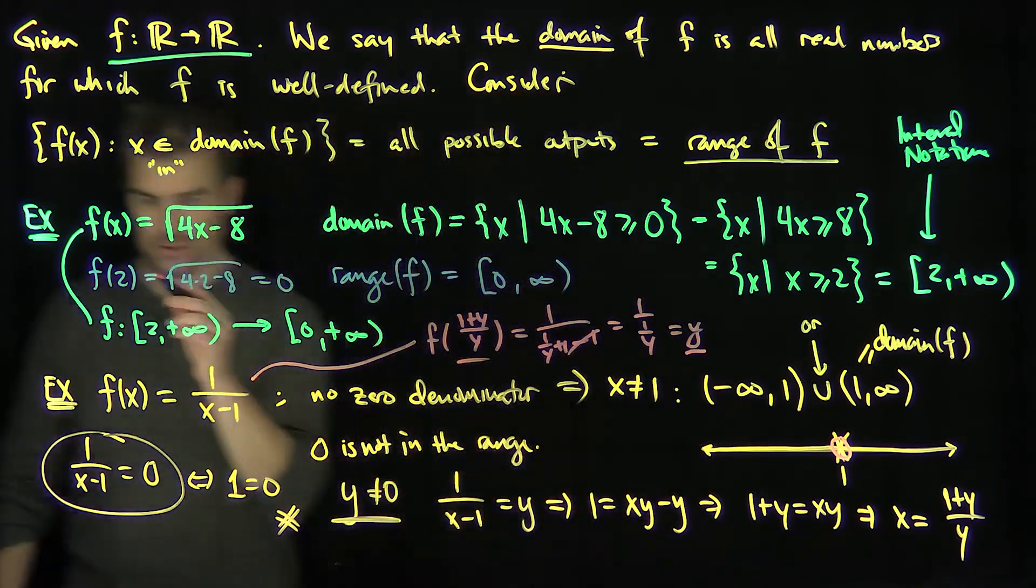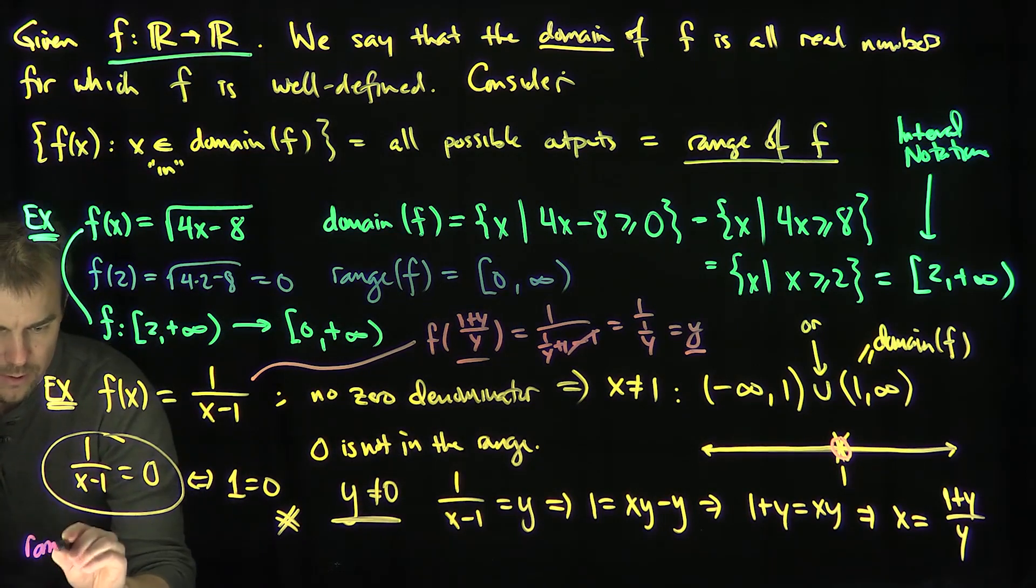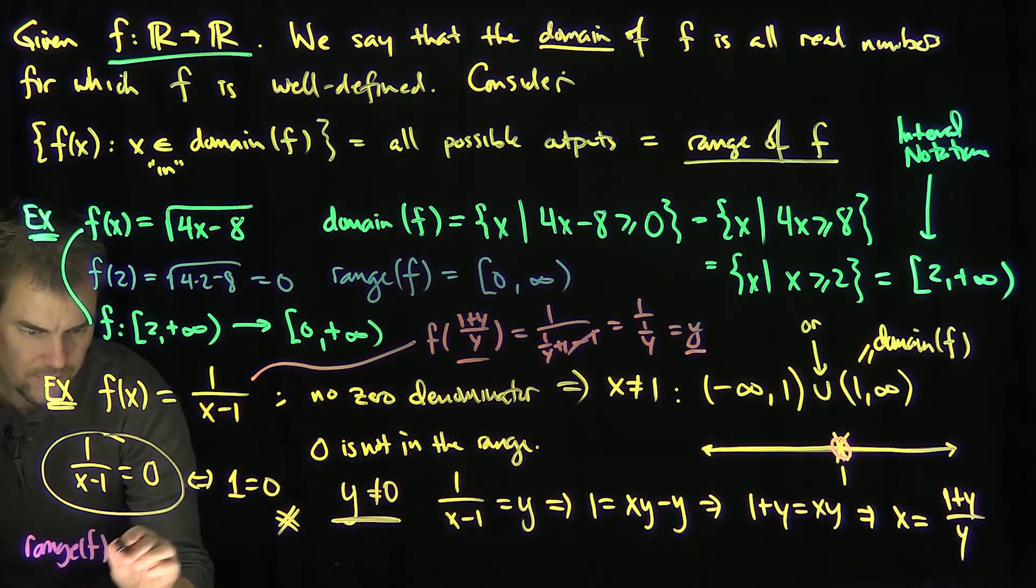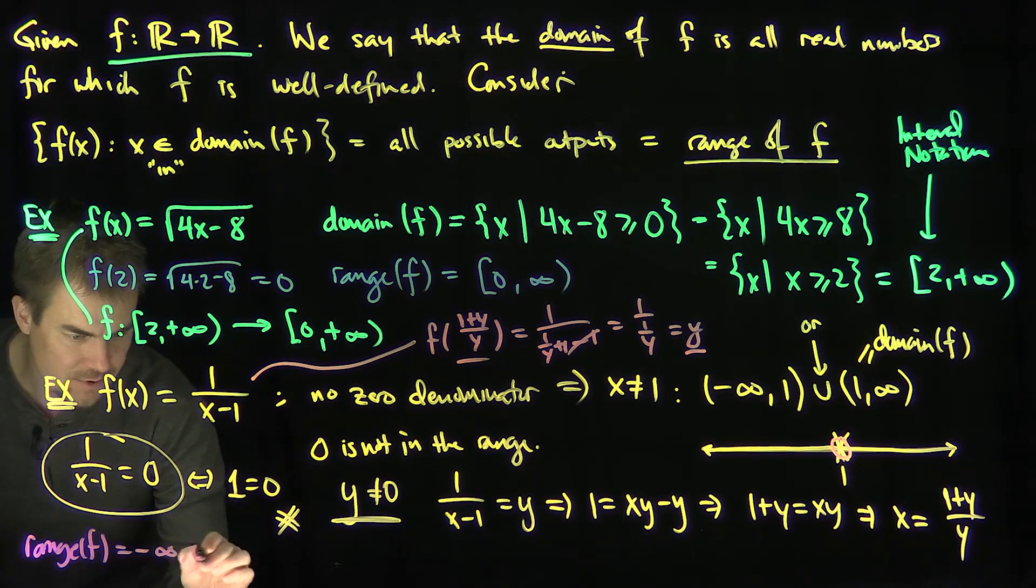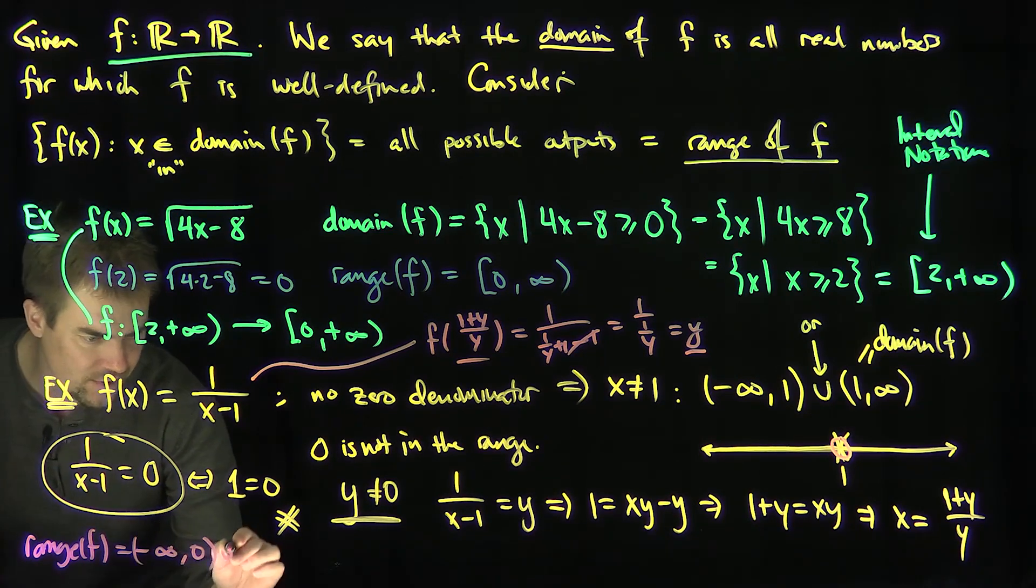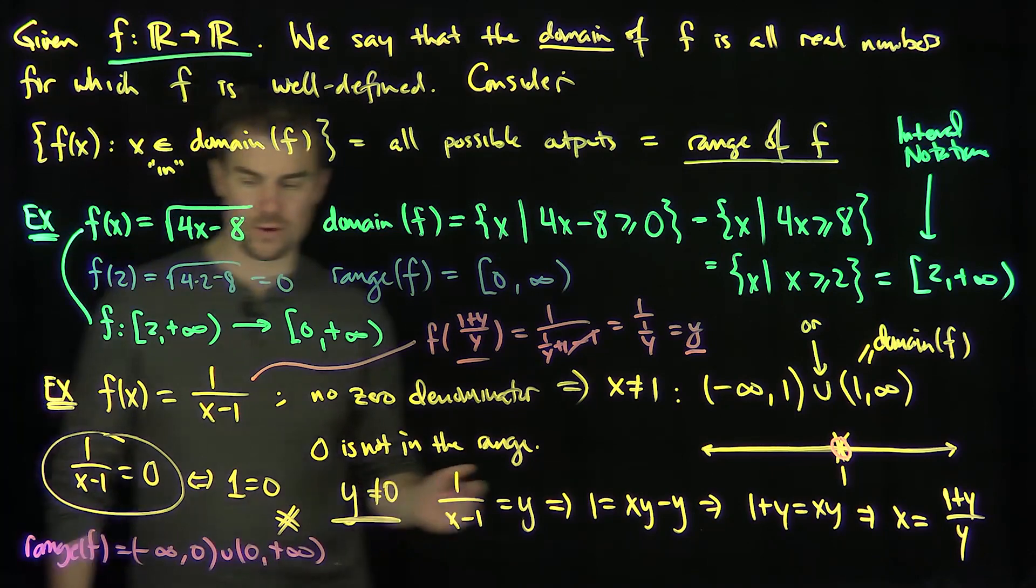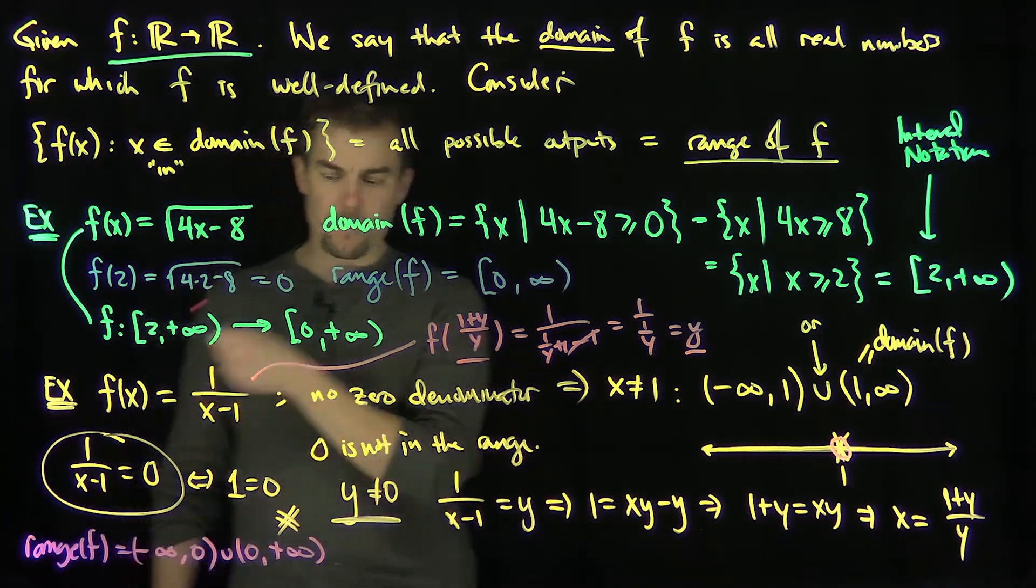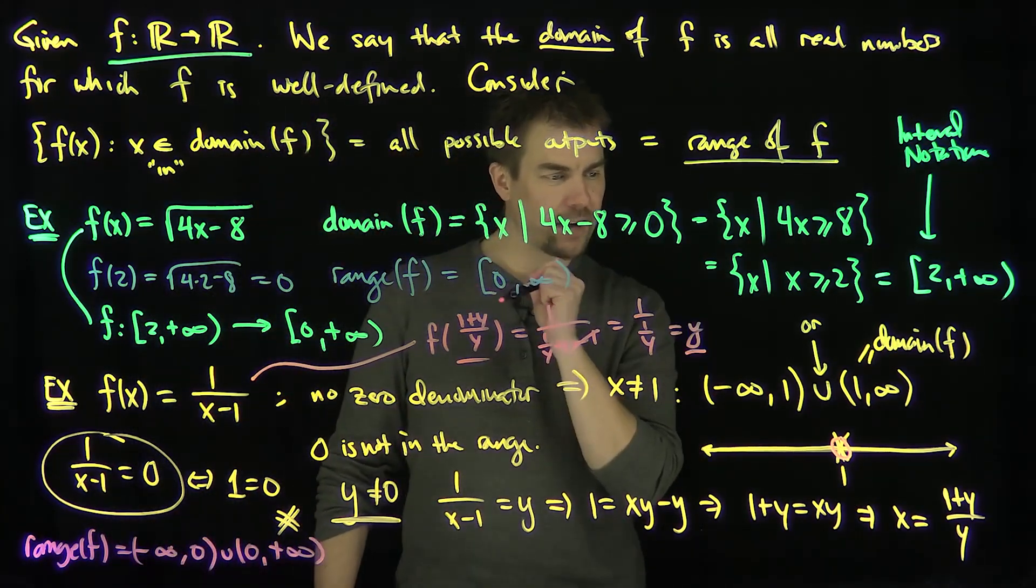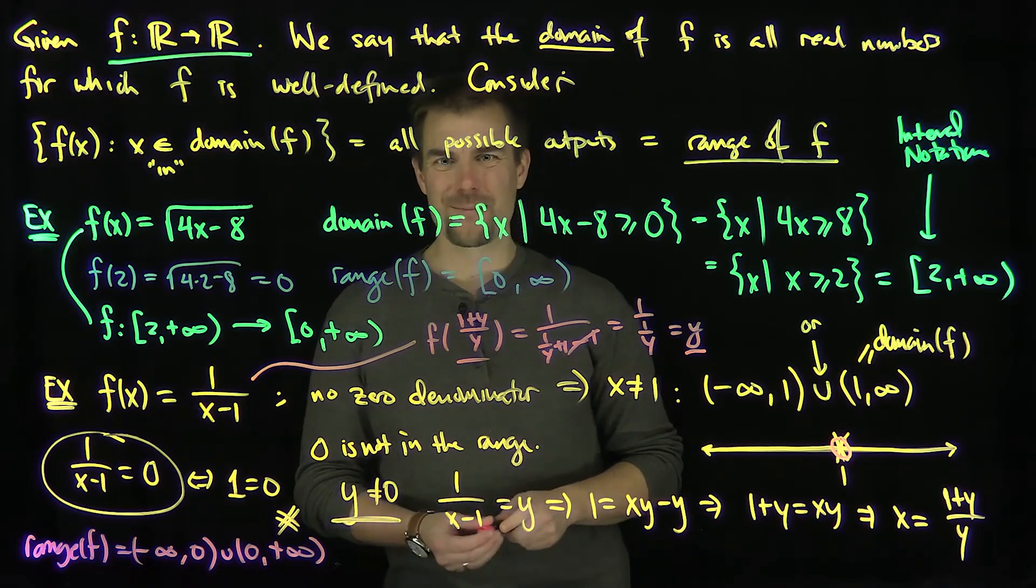That tells me that the range of this function, the range of f is negative infinity up to 0. You exclude 0 and you go from 0 to positive infinity. So the range of this function is every real number but 0 and the domain of this function is every real number except for 1. Thank you very much.